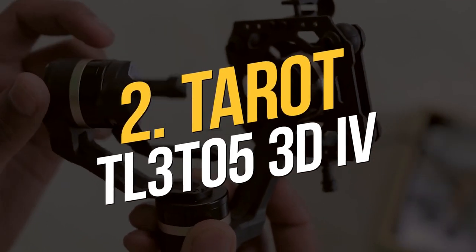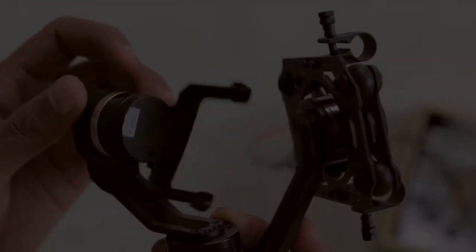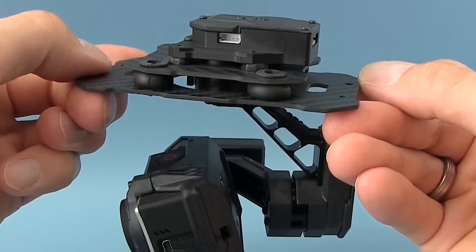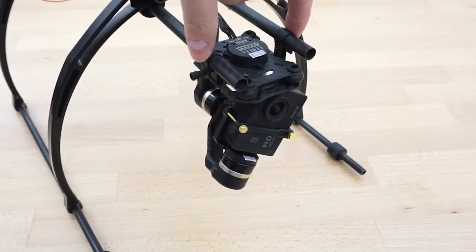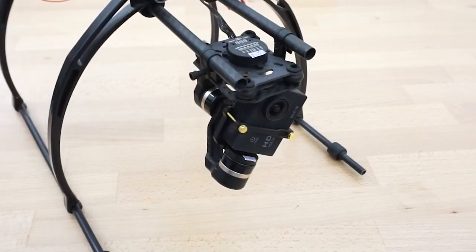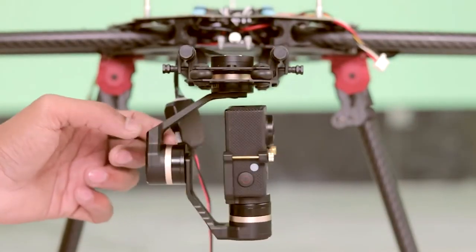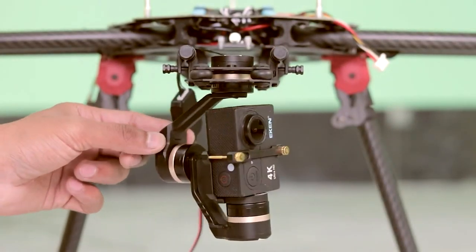Number two, Taro TL3T053DIV. This gimbal was recognized as a superb and faultless variation by videographers. The performance is excellent, the design is outstanding, and the pricing is reasonable. Based on the Taro Jimbo T3D, this device is particularly built for GoPro 5.